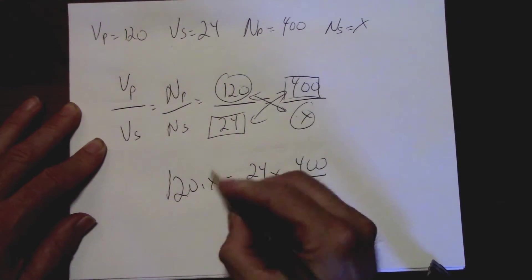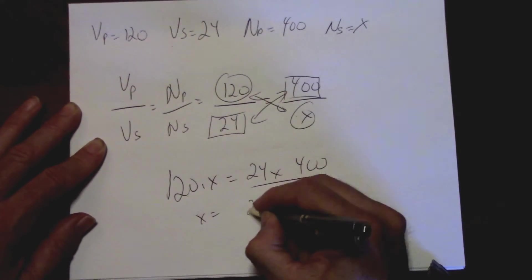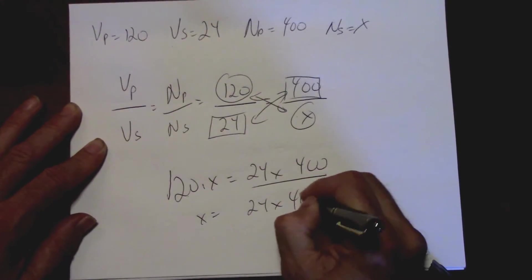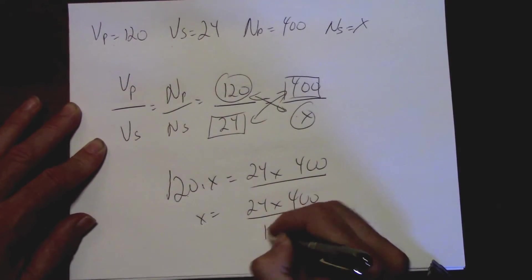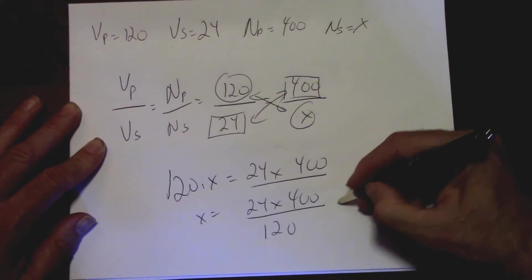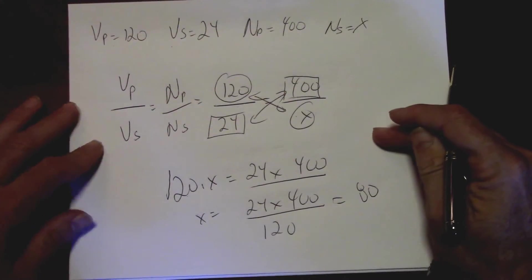If I bring over the 120 now, X equals 24 times 400 over 120. Now it gives me a total of 80 turns.